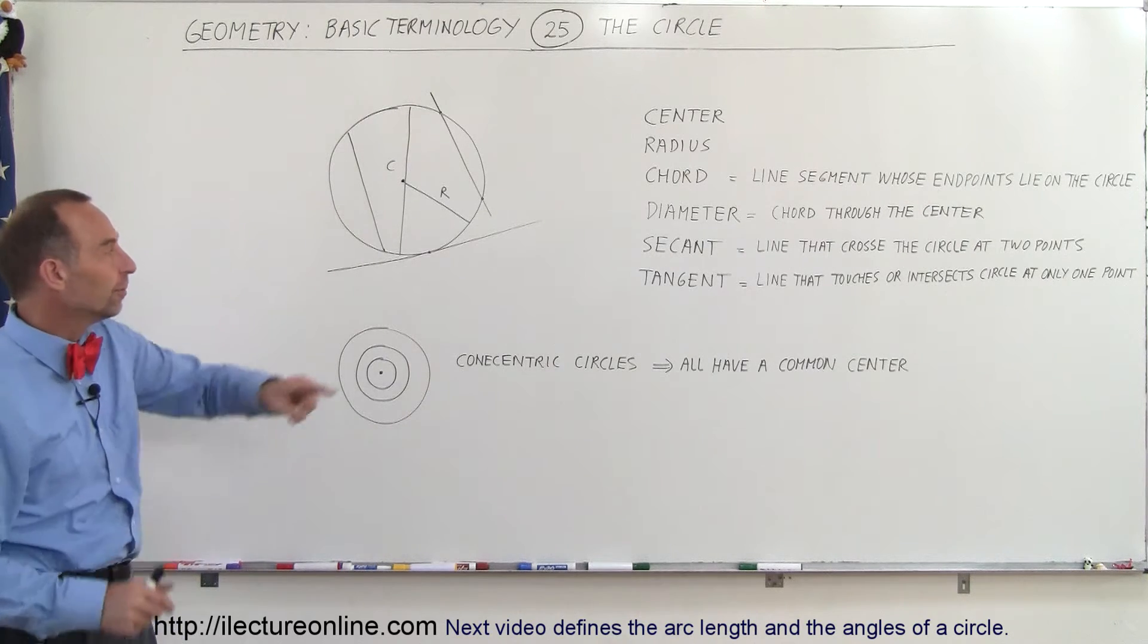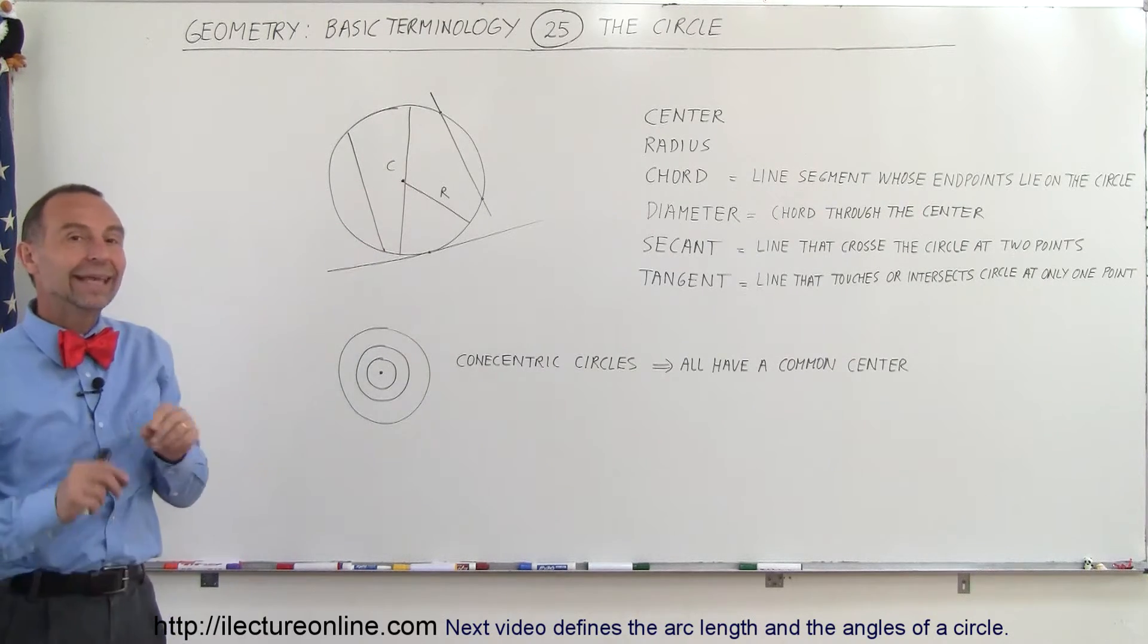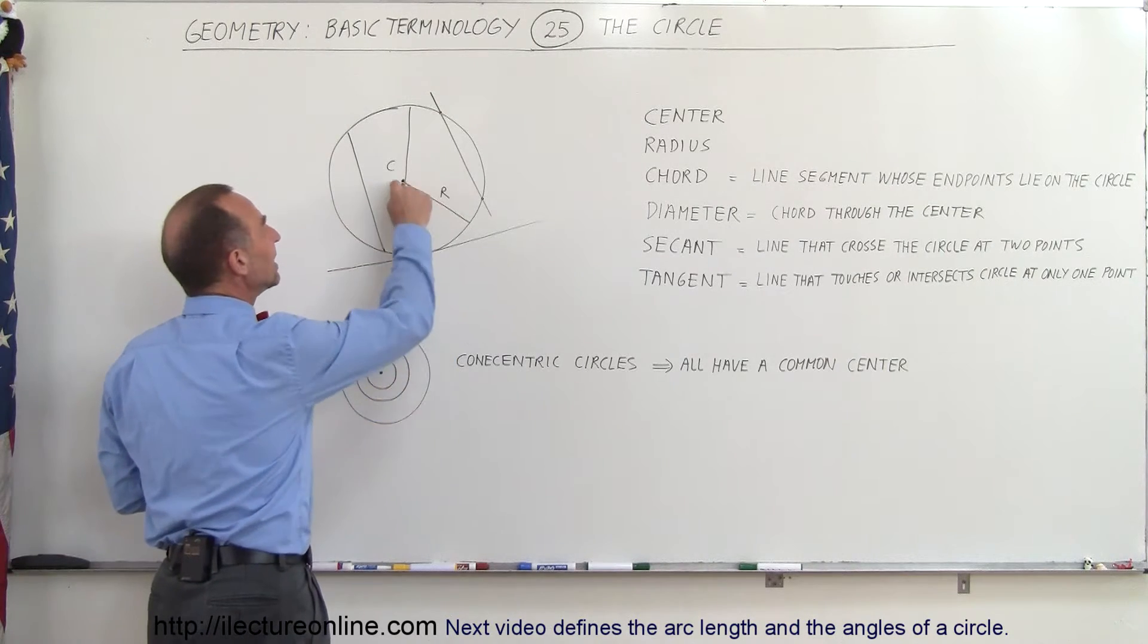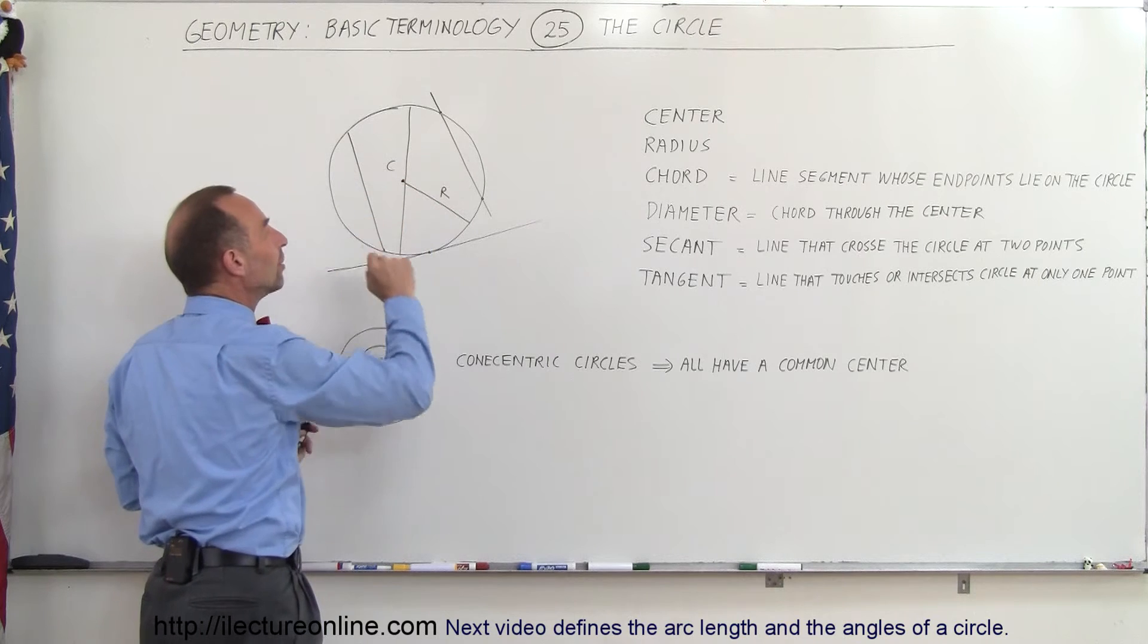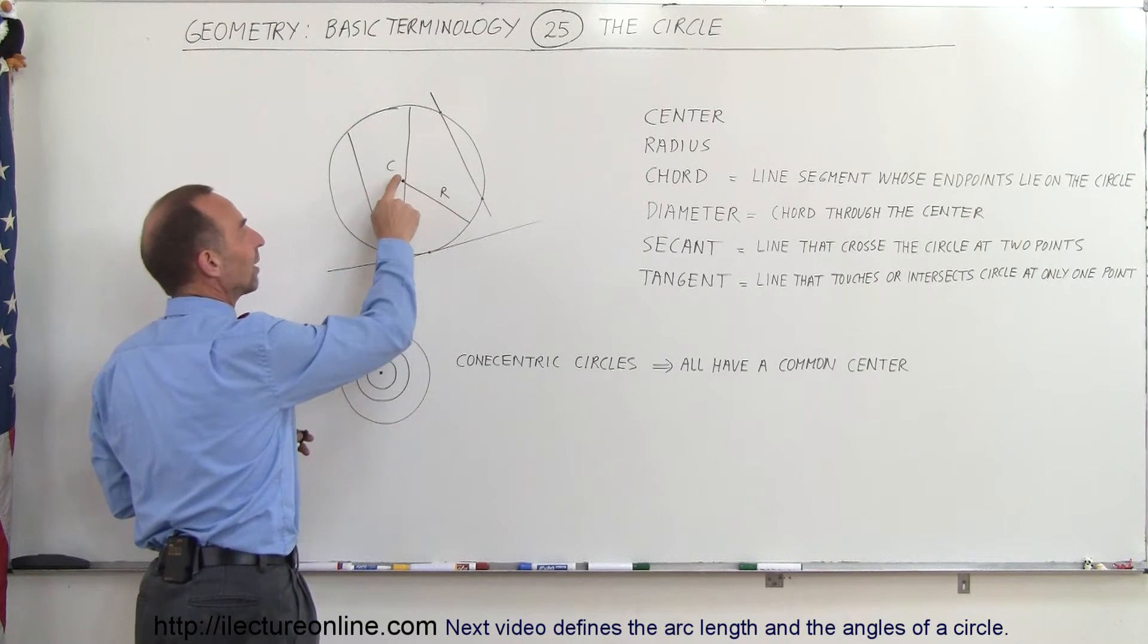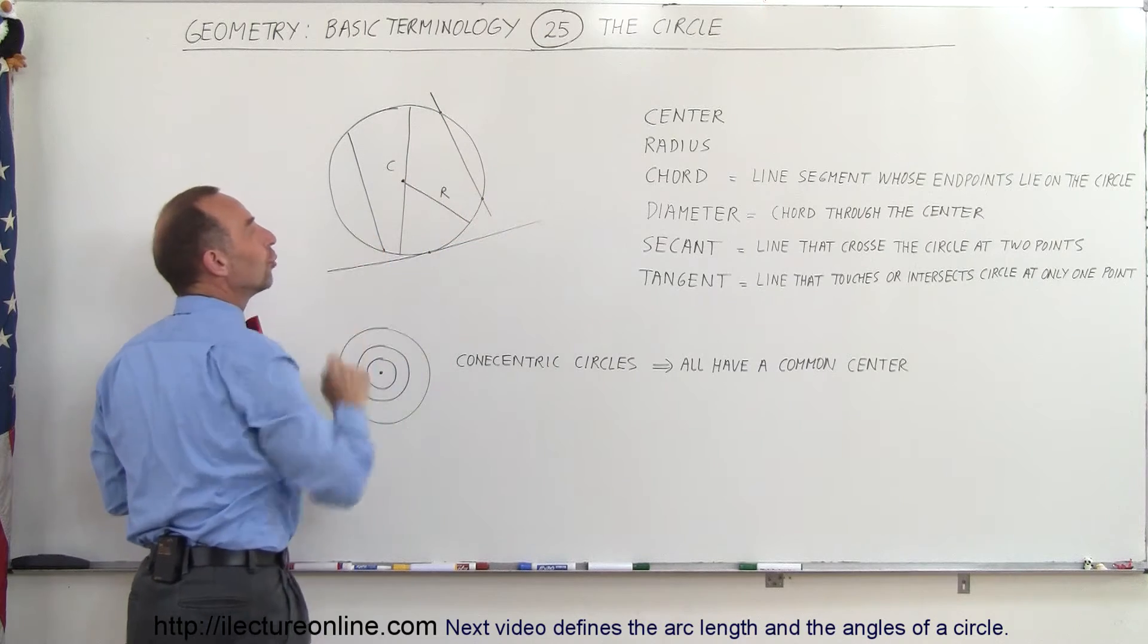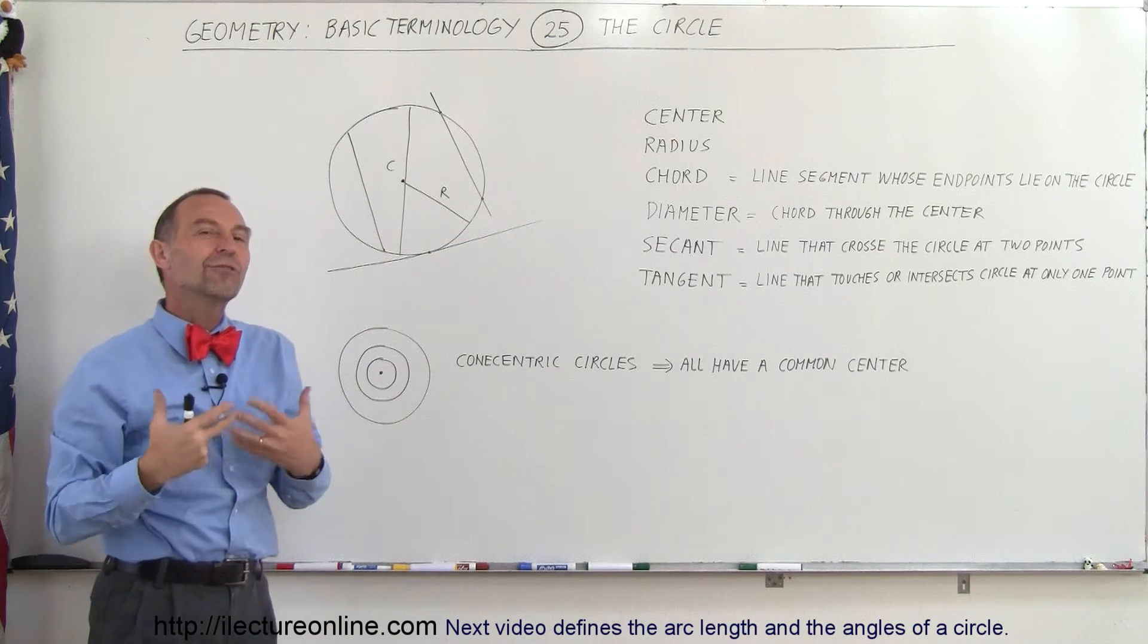The circle has a center, a point, and then the line that forms a circle. Every point on that line is equal distance away from that one point, and the distance from that center point to the edge where the circle is, that's called the radius. So that's how we define a circle.